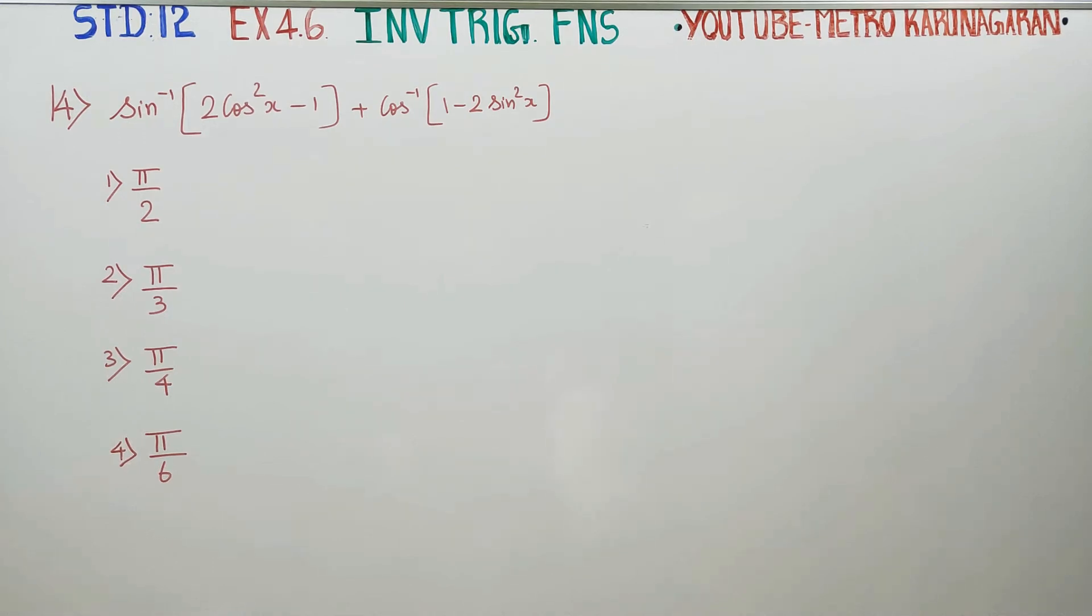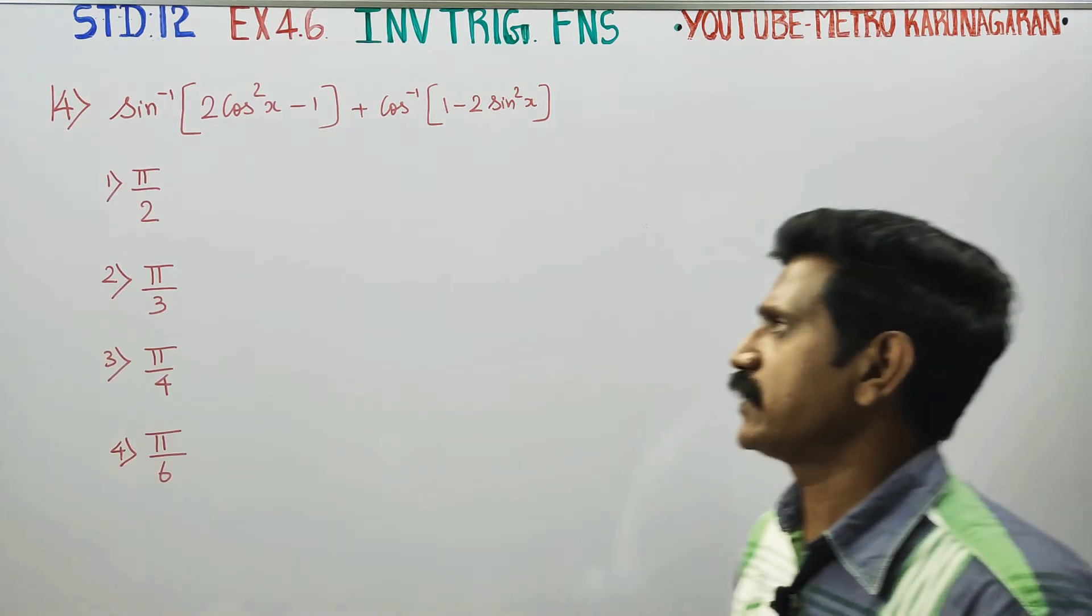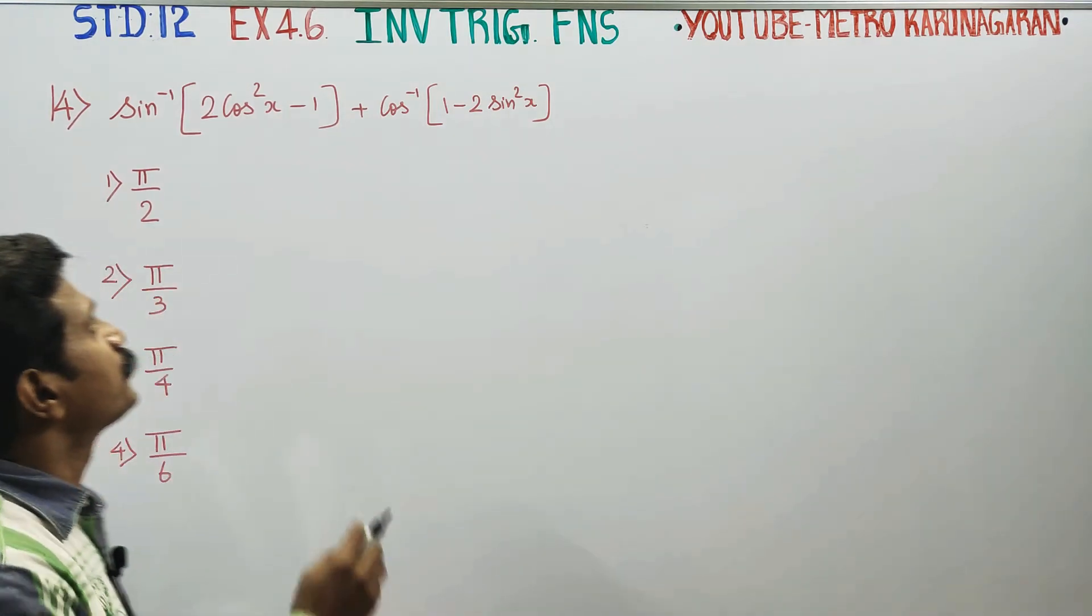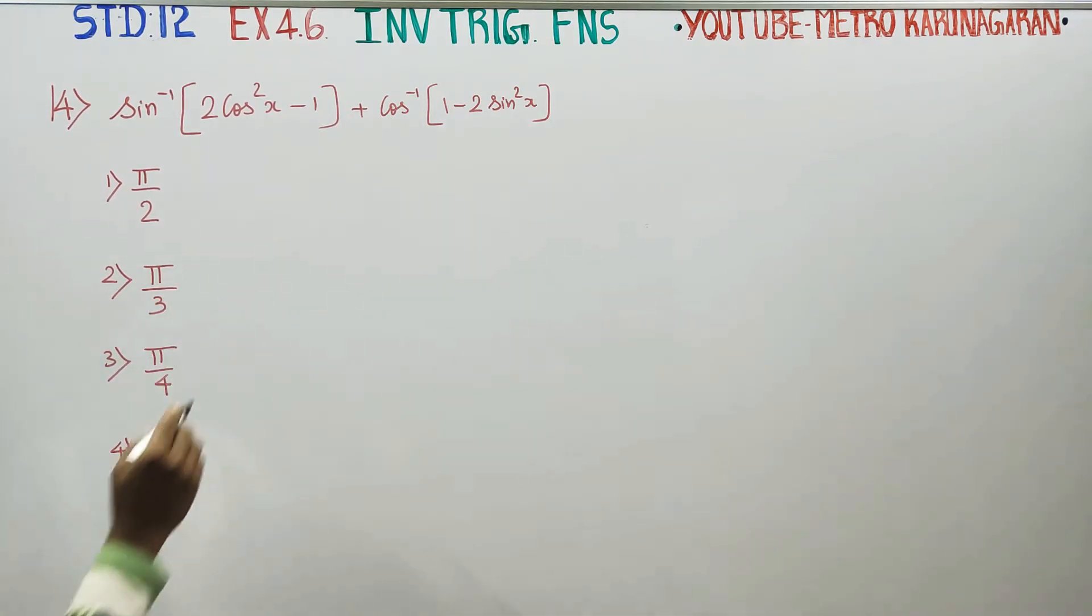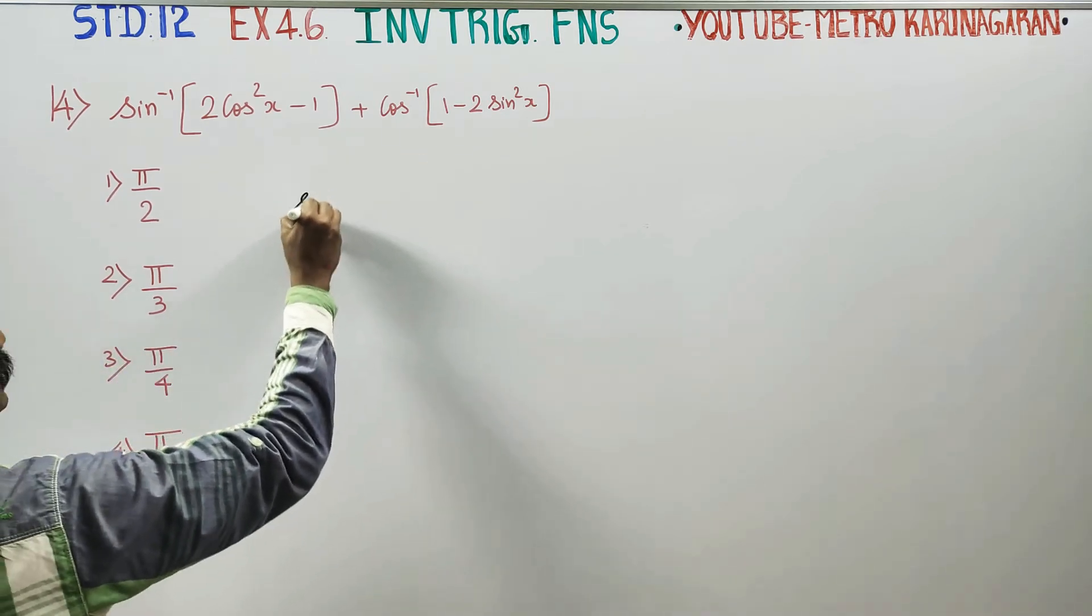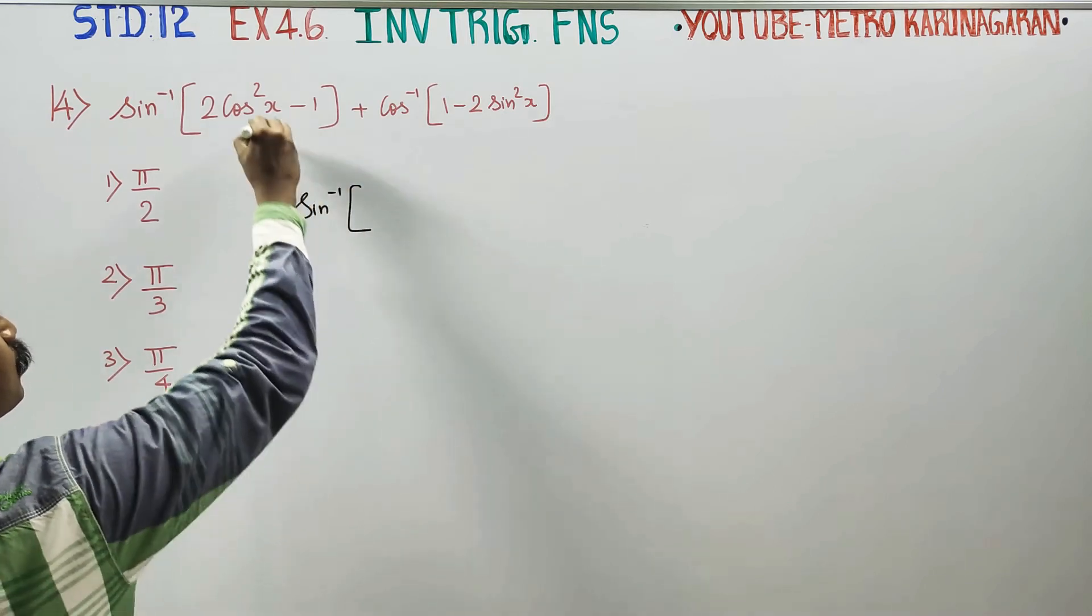Dear 12th standard students, in exercise 4.6 inverse trigonometric functions, multiple choice question number 14: sin inverse of 2 cos²x minus 1 plus cos inverse of 1 minus 2 sin²x.